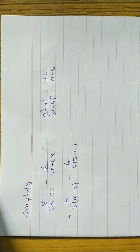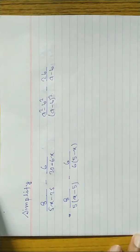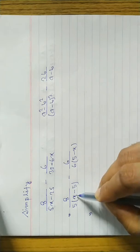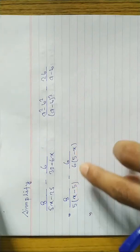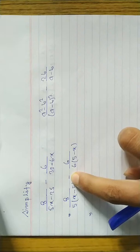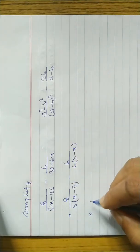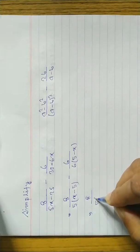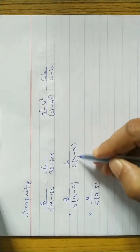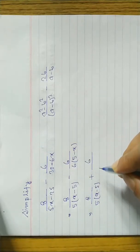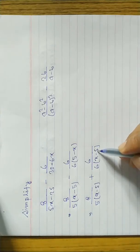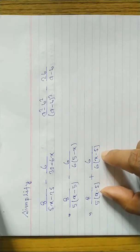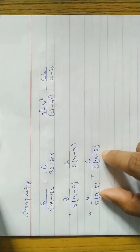First we take the common factor, then factorize or take LCM. Now you can see here we have x minus 5 in one denominator and 5 minus x in the other — both are not the same. We have to make them the same by taking minus as common. When you take minus common, the minus becomes plus, and we can interchange the terms. So we write 8 by 5(x minus 5), and for the other fraction, taking minus common from 6(5 minus x) gives 6(x minus 5).